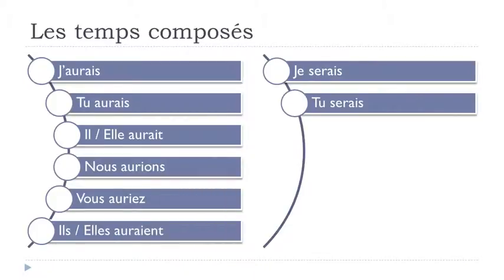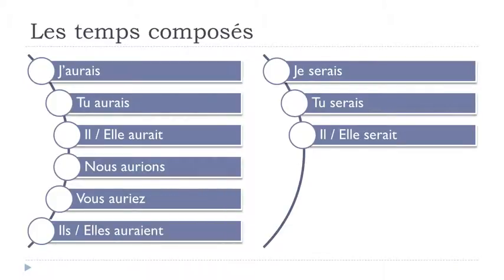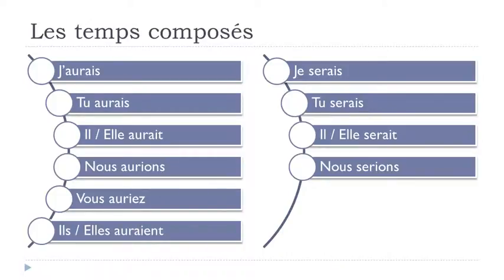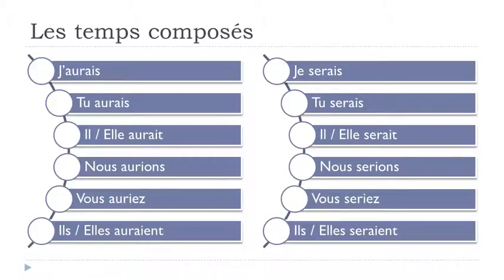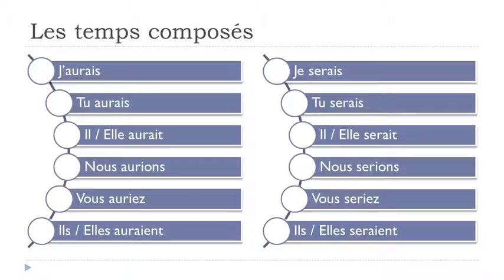For être at the conditionnel présent: je serais, tu serais, il serait, elle serait, nous serions, vous seriez, ils seraient, elles seraient. Final S not pronounced for je serais and tu serais; final T not pronounced for il serait and elle serait; final S not pronounced with liaison for nous serions; EZ for vous seriez; ENT not pronounced for ils seraient. This is the first part you should use when forming the conditionnel passé.